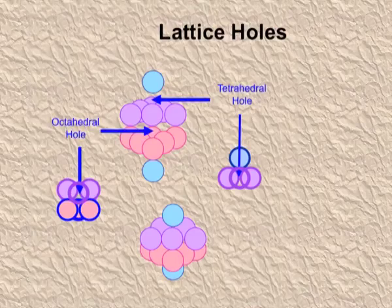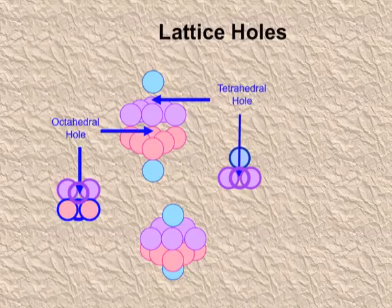Dear students, I have explained the packing in solids — packing in one dimension, two dimensions, and three dimensions. I also explained the voids, also known as holes or interstitial spaces, which are left even after the closest packing. I hope it is all clear to you.